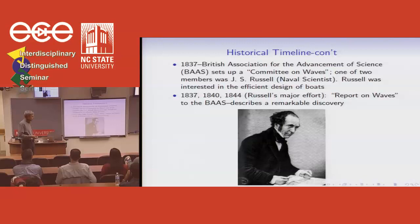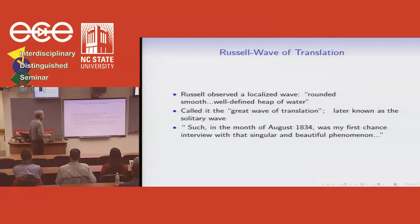1830s, the British Association for the Advancement of Science set up a committee on waves. And one of its members was John Scott Russell, as an early print of him. And he was interested in naval architecture. And they wrote three reports. 1844 was their major report to the British Association, whereupon they talk about discoveries mostly made by Russell. And he had observed a localized wave.